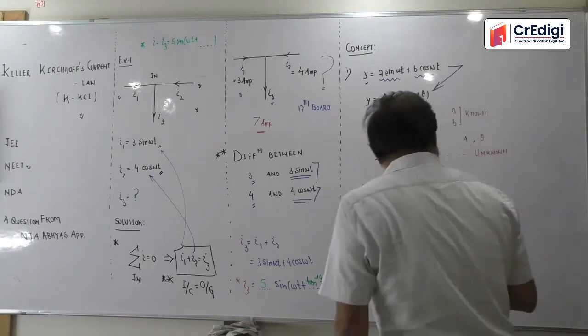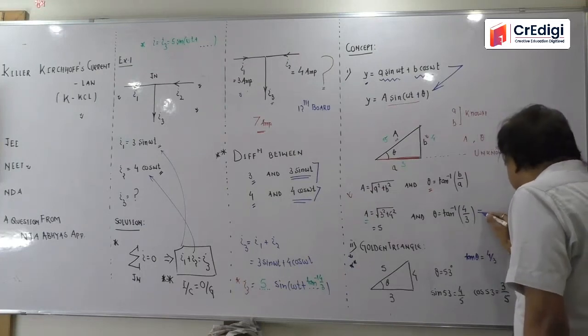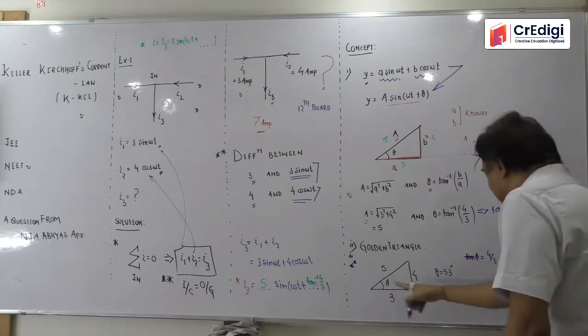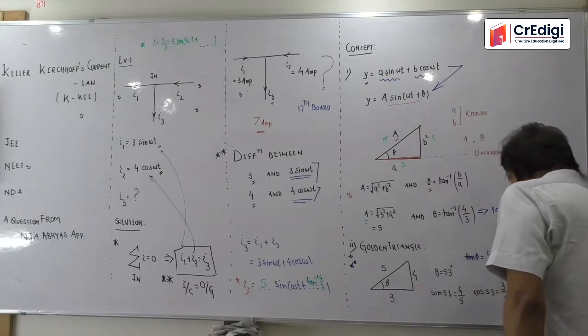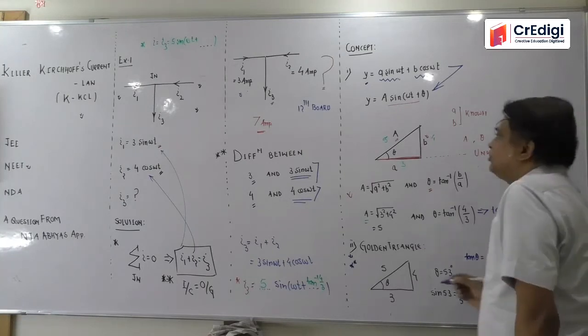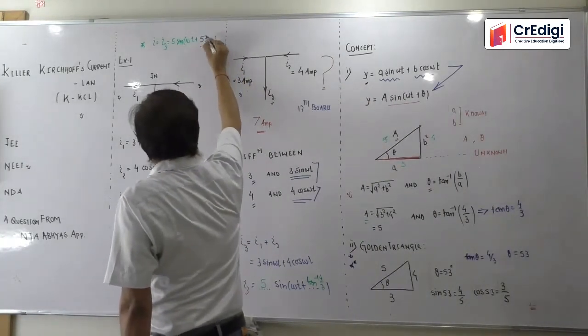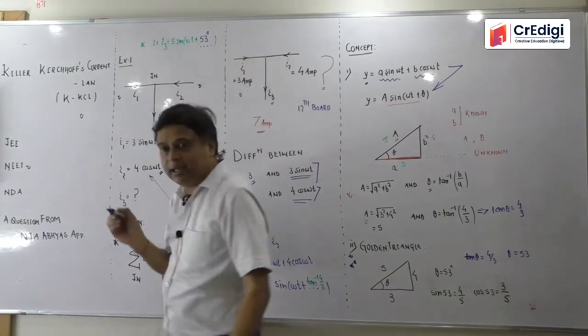So sin theta, look from here, this by this, 4 by 5. Cos theta look, base by this, 3 by 5. Tan theta to find, find. This tan theta will be equals to this divided by this. Now if you ask what came, then I had value, it was tan inverse 4 by 3. This means tan theta is equal to what? Tan theta is 4 by 3, so theta is how much? Mine is 53 degree.